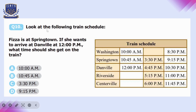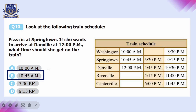Question number ten: looking at the train schedule, Visa is at Springtown and wants to arrive at Danville at 12 PM. According to the schedule, if she takes the train at 10:45 AM she will reach Danville at 12 PM. So she should choose 10:45 AM, making option B correct.